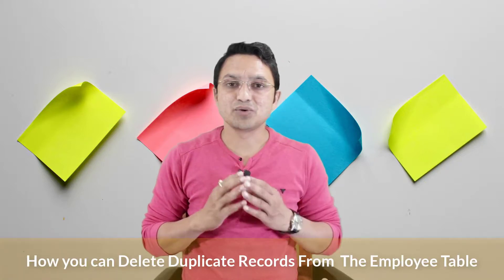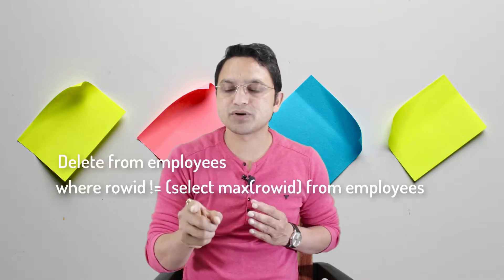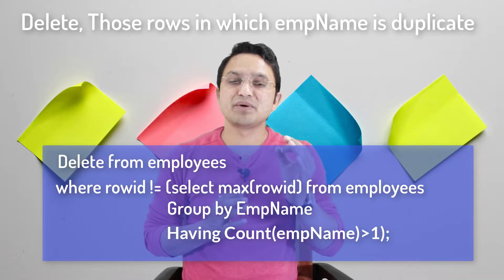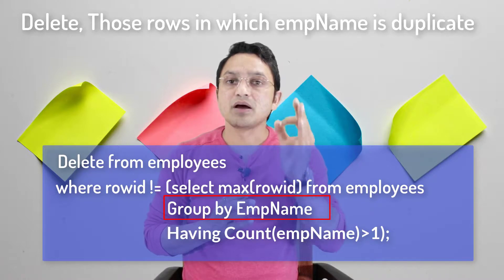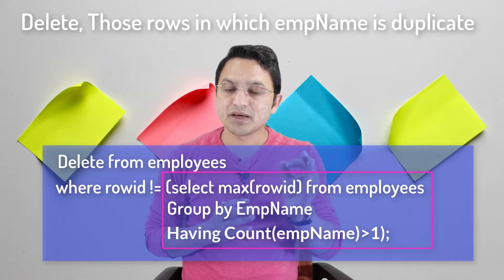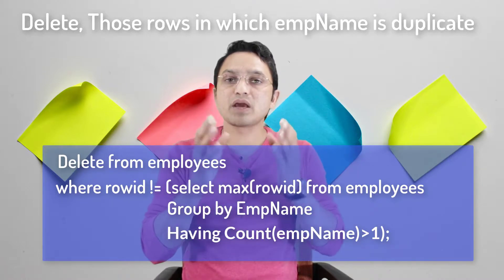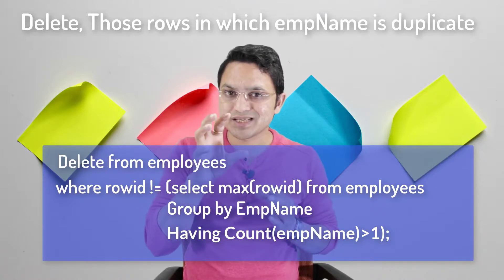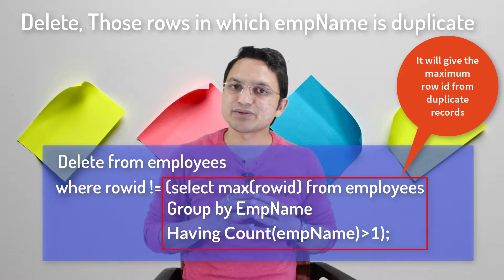To delete the duplicate rows from the employee table, you have to use this query. I have used the combination of the GROUP BY clause, HAVING clause, subquery, and MAX function. I have used the child query, as you can see in the highlighted area.